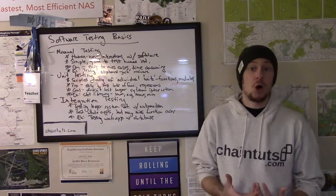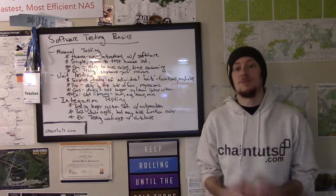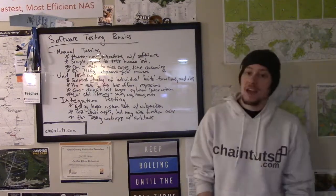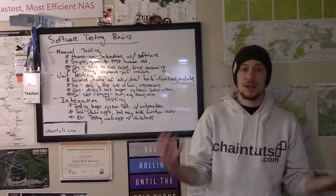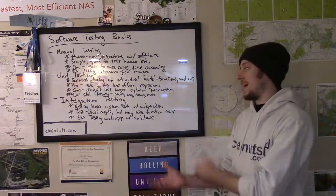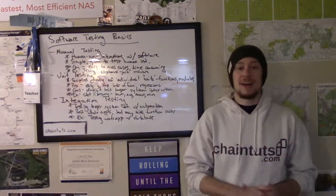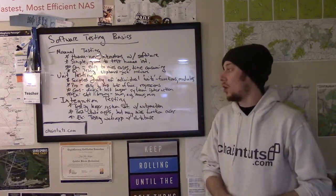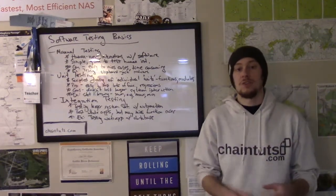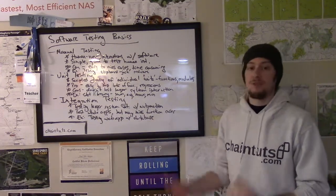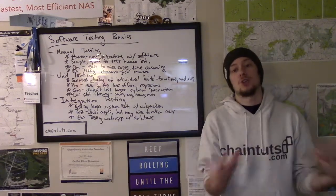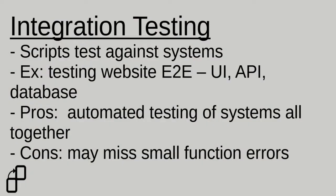A disadvantage of unit tests is that they don't test the interactions of larger systems, so we're going to talk about that in our next type of testing. And this is what we call integration testing. Sometimes it can be called end-to-end testing and various other subtypes. This is again a form of automated testing, but here we're going to test against larger system interactions.